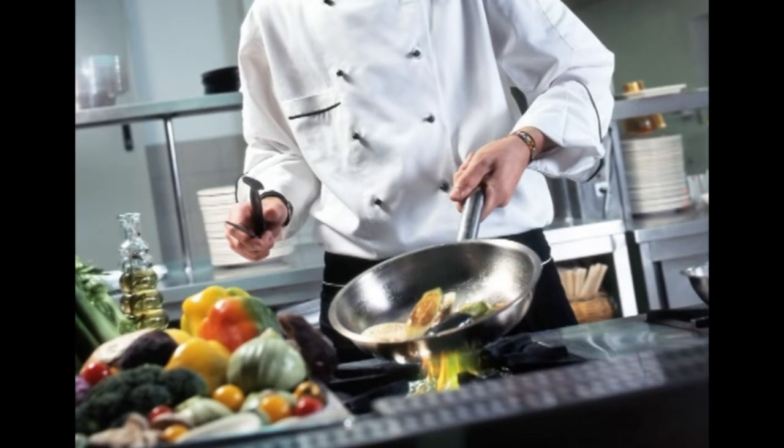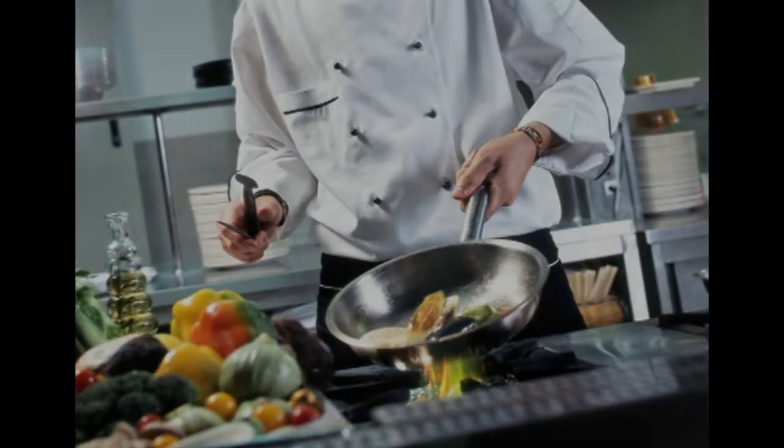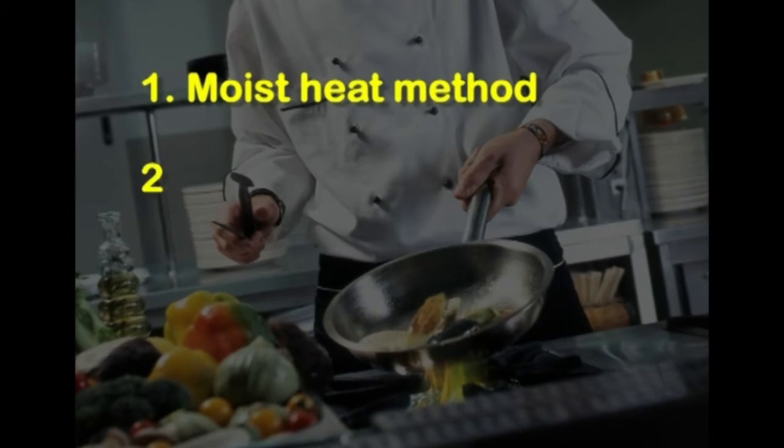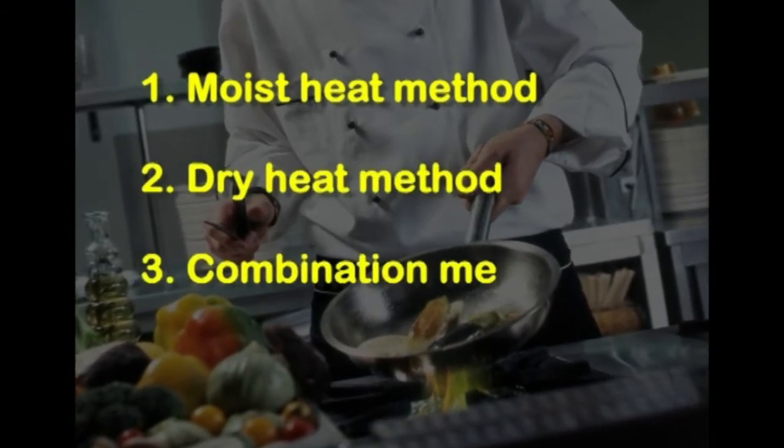Hope you all understood the advantages of cooking, and that we have to know the basic methods of cooking. Basically cooking methods are divided into three categories: moist method, dry method, and combination. Let us see the different cooking methods that come under the moist heat method.